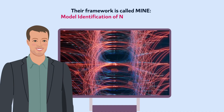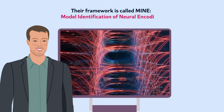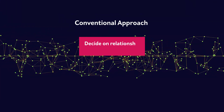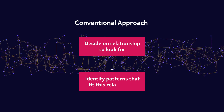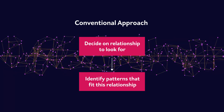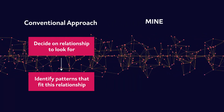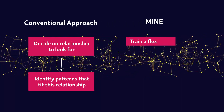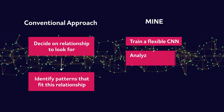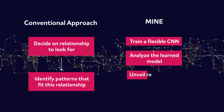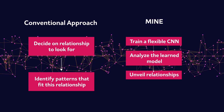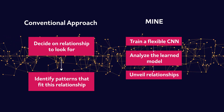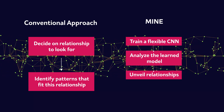Their framework is called MINE, which stands for Model Identification of Neural Encoding. Most conventional approaches first decide which relationship to look for in the data and then identify patterns that fit this relationship. MINE takes an opposite approach: it first trains a flexible CNN and then analyzes the learned model to unveil relationships between brain activity and predictors such as external stimuli and a person's internal states and behaviors.